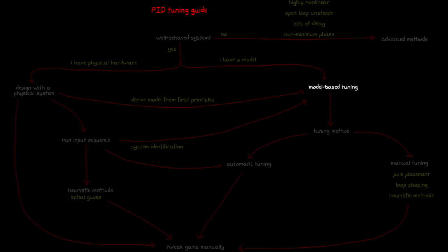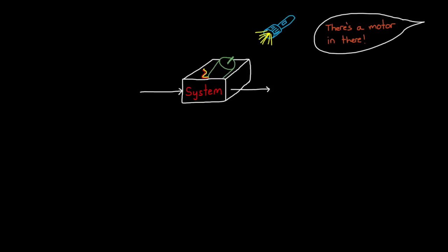Alright, the first method we're going to talk about is deriving a model from first principles. If your system is simple enough to understand, then you can write out the equations directly that govern its behavior. This is sometimes referred to as the white box method, because it's as if you shined a flashlight into the box representing your system and was able to see all the bits and pieces that make it up. And since you know everything about it, you can derive a model using whatever technique you enjoy or are good at.